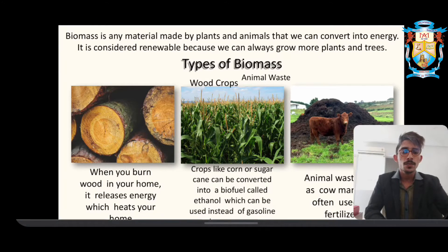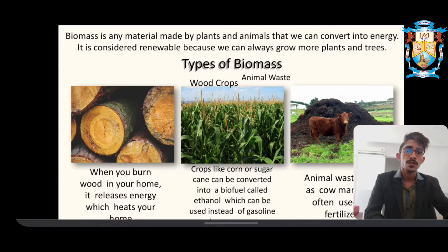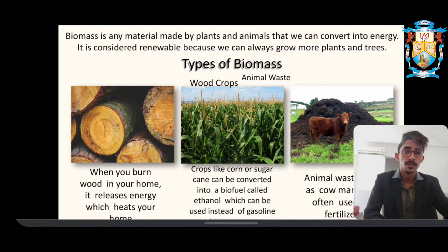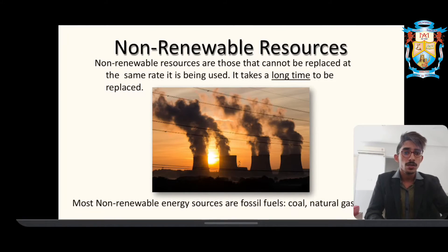The next type of energy is biomass, which is made from plants and animal waste that can be converted into energy. You can see different types of biomass: burning wood gives us heat energy; crops like corn and sugarcane can be converted into a biofuel called ethanol, which is a highly flammable liquid; and animal waste can be turned into fertilizers, helping with cultivation. These were all the renewable resources.